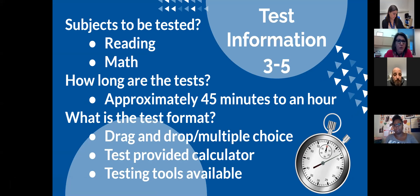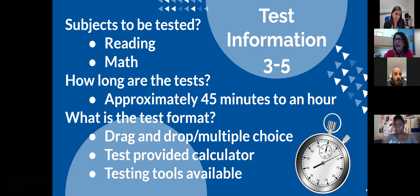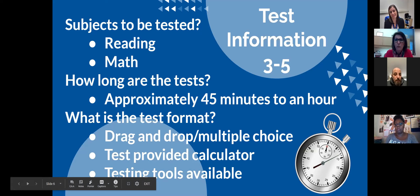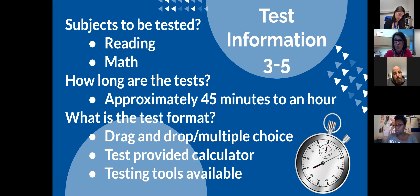Our third through fifth graders also take reading and math, and it usually takes them 45 minutes to an hour. They also have drag-and-drop and multiple choice, and a calculator may pop up during the test — that lets students know they can use that tool for that part. They're not allowed to use an outside calculator for other portions. Third through fifth graders also have testing tools available such as highlighters, line readers, and a notepad. The key difference is that third through fifth grade students read the test on their own — there is no read-aloud portion.